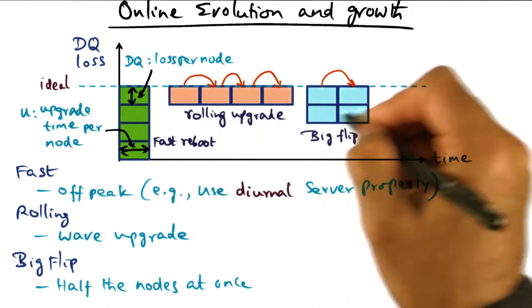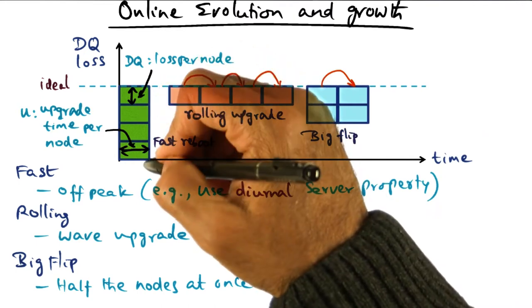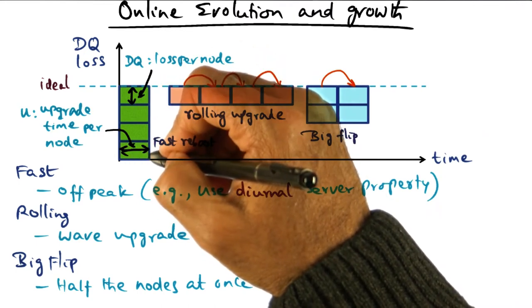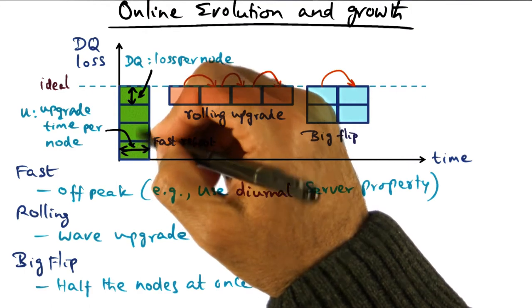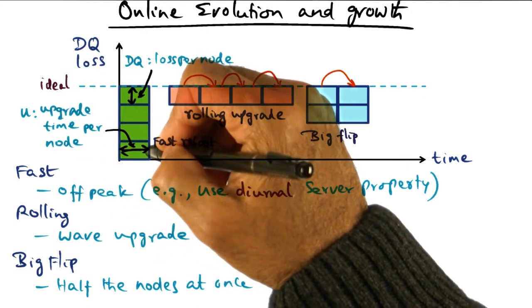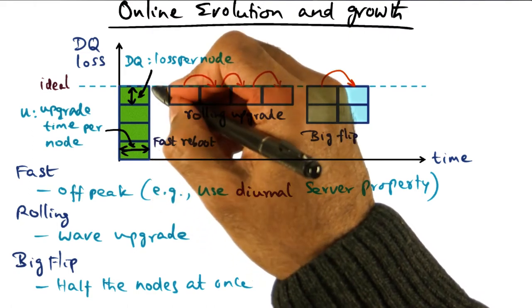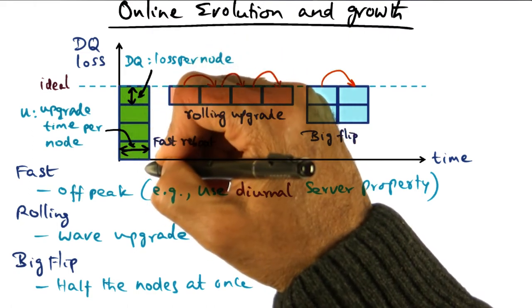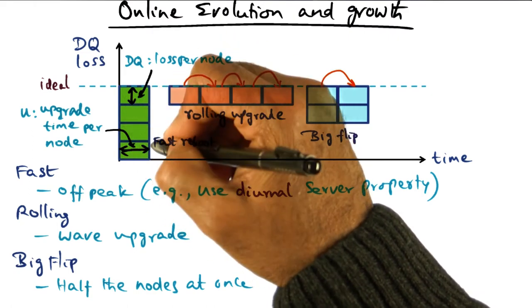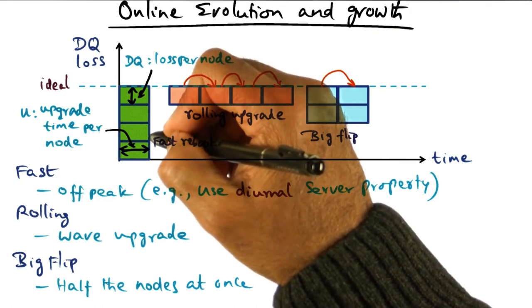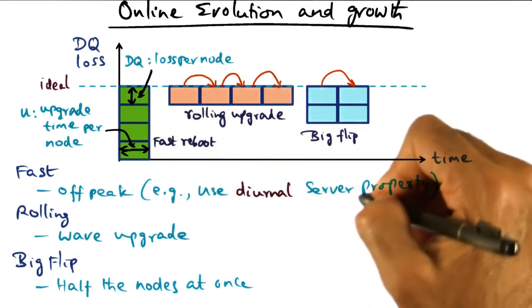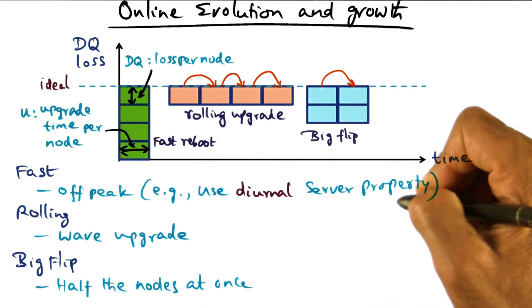So these are the three different choices that you've got. The fast reboot, where the upgrade time for the entire service is just equal to the upgrade time for a single node. But here, we don't have the service available for any of the users for that period of time. And this might be a good strategy for services that can exploit the diurnal property of user community.